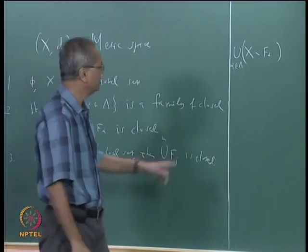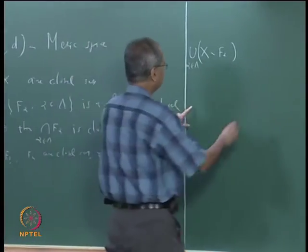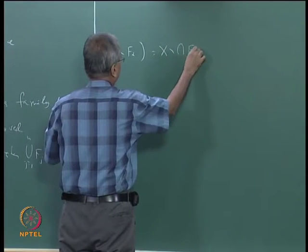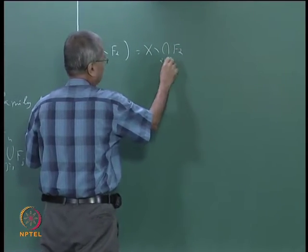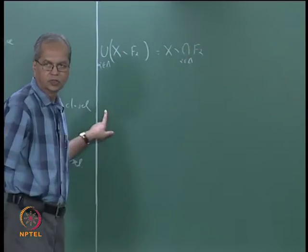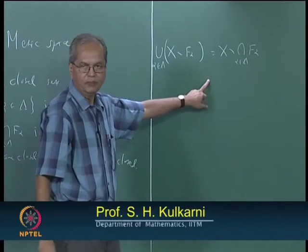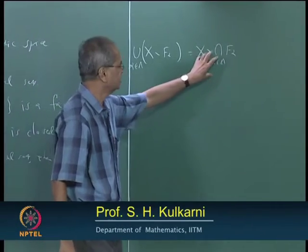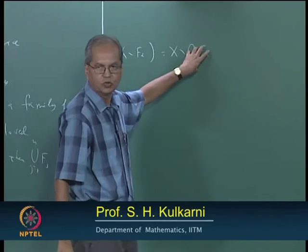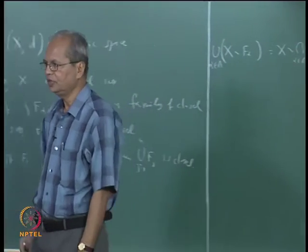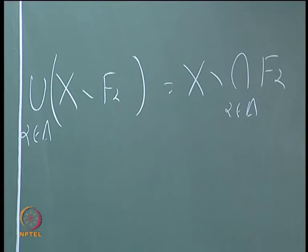This union is nothing but X minus the intersection of F_alpha. Since this is open, it means the intersection must be closed. Similarly, you can prove about the finite unions using the same approach. But of course, that is not the only way — you can prove this directly as well.